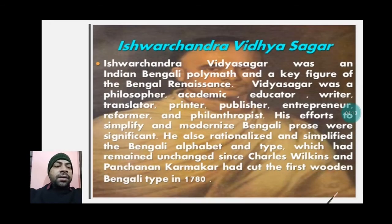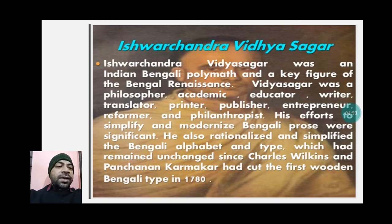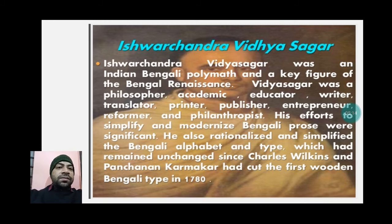The next well-known social reformer was Ishwar Chandra Vidyasagar, an Indian Bengali polymath and a key figure of the Bengali Renaissance. Vidyasagar was a philosopher, academic, educator, writer, translator, printer, publisher, entrepreneur, reformer and philanthropist. His efforts to simplify and modernize Bengali prose were significant. He also rationalized and simplified the Bengali alphabet and type, which had remained unchanged since Charles Wilkins and Panchanan Karmakar cut the first wooden Bengali type in 1780.